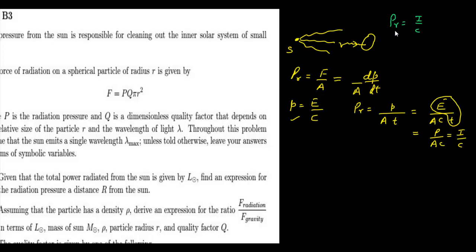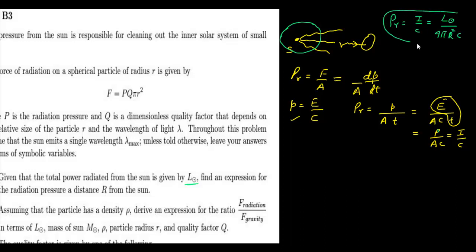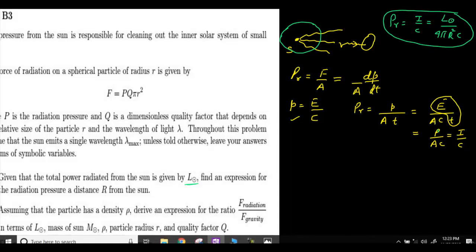To find the radiation pressure, we substitute the value of I — power per unit area. The power is L_solar and the area over a sphere of radius R is 4πR². Treating the sun as a point source radiating in all directions, the radiation pressure at distance R is: P_R = L_solar / (4πR²·C). This is the answer to part 1.